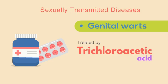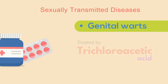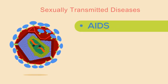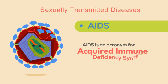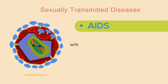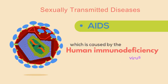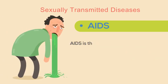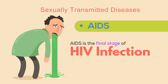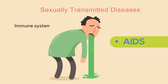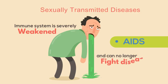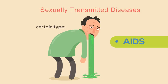The seventh and most dangerous type is AIDS, an acronym for Acquired Immune Deficiency Syndrome, which is caused by the Human Immunodeficiency Virus or HIV. AIDS is the final stage of HIV infection, where the immune system is severely weakened and can no longer fight diseases or certain types of cancer.